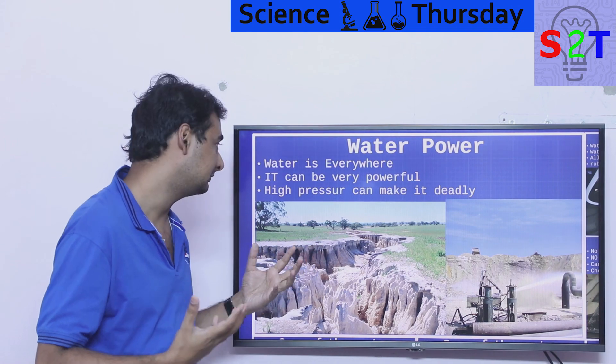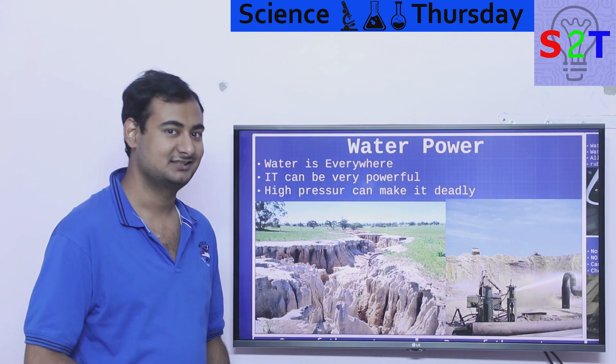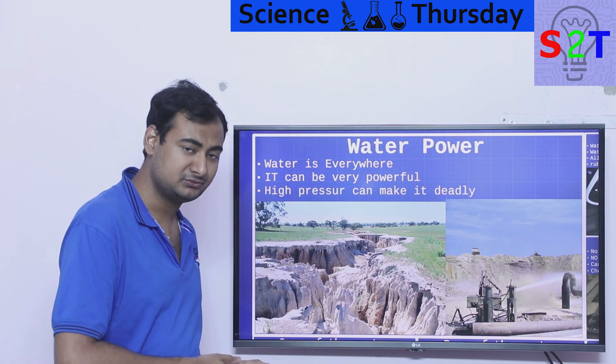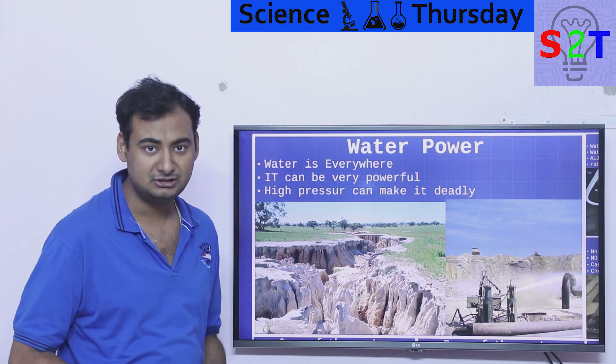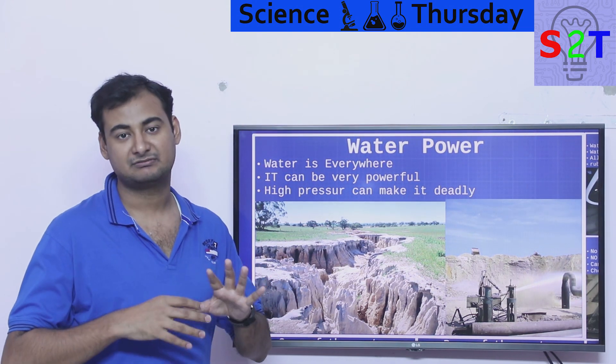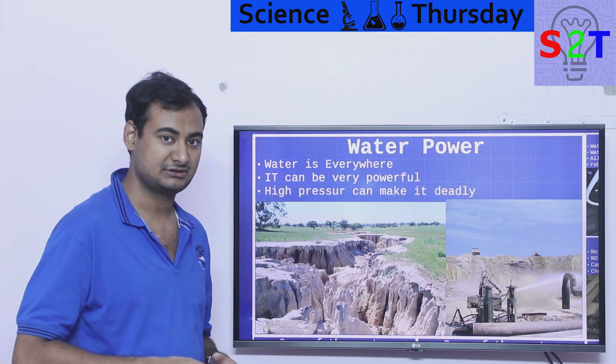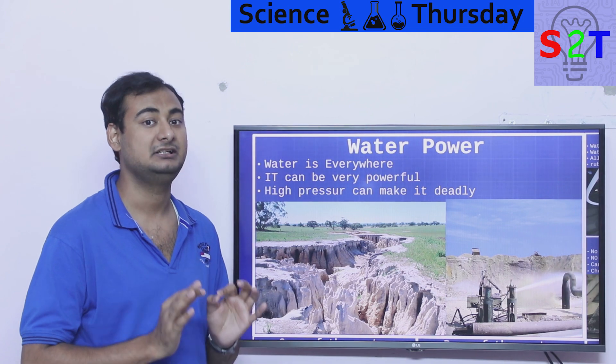Well first we have to understand water power. Now why do we want to use water as a cutting material? Simply put, it's everywhere. Basically everywhere there is human there is water or otherwise humans wouldn't be there. So water in terms of abundance, it's already there. It's not like argon or oxygen or something like that. It's very easily readily available.